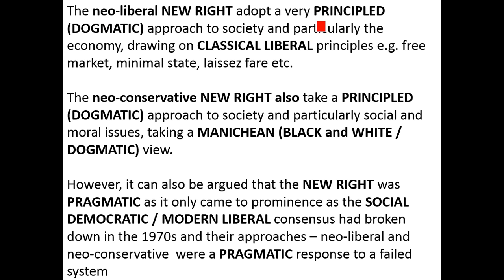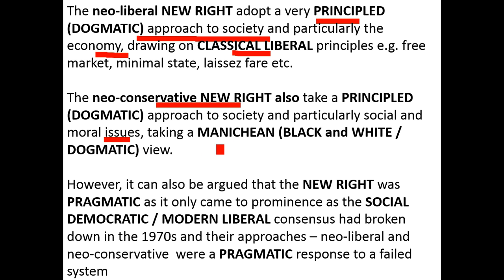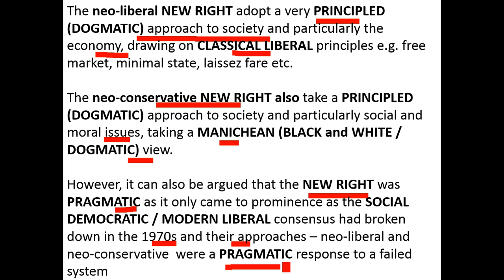In summary, the neoliberal New Right adopts a very principled, dogmatic approach to society and particularly the economy, drawing on classical liberal principles: free market, minimal state, laissez-faire. The neoconservative New Right also takes a principled, dogmatic Nietzschean black-and-white view on social and moral issues. However, it can also be argued that the New Right was pragmatic in the sense that it only came to prominence as the social democratic or modern liberal consensus had in effect broken down in the 70s, and their approaches were simply a pragmatic response to a failed system.